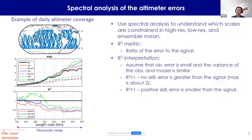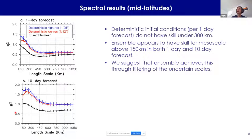An important note: altimetry does not provide useful information for scales under 150 kilometers. Averaging over multiple ensemble realizations, we look at a one-day forecast as a proxy for the initial condition. For a ten-day forecast, both deterministic models lack skill under 300 kilometers in the mesoscale regime, but the ensemble does show skill — and the same picture holds for the ten-day forecast.